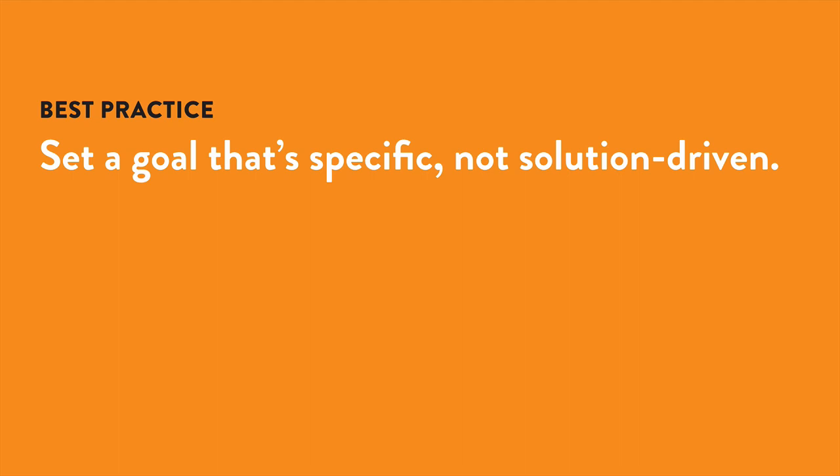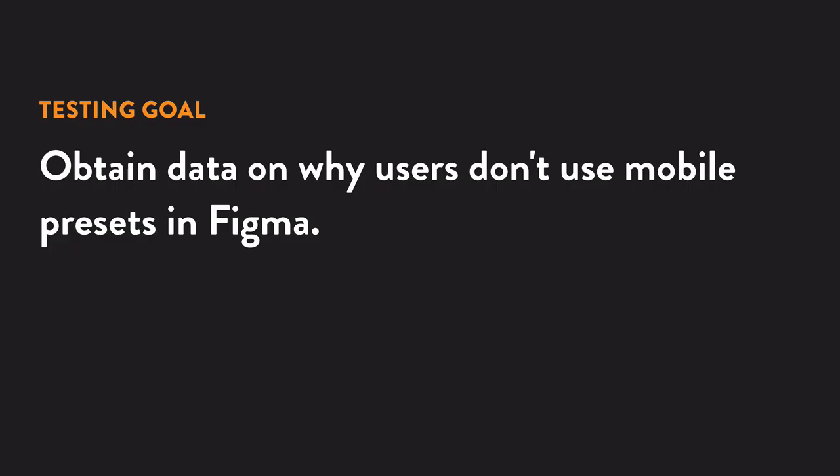Your first step is to set a research goal or objective, which is the idea or question that you want to understand at a deeper level by performing research. This means you need to ensure that the goal doesn't assume a solution — it should welcome all possibilities. In this example, our testing goal is to understand why users don't use mobile presets and uncover what they do instead.